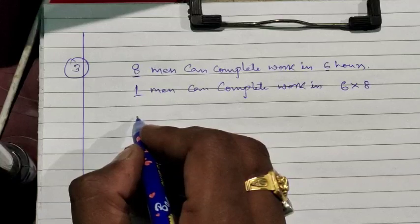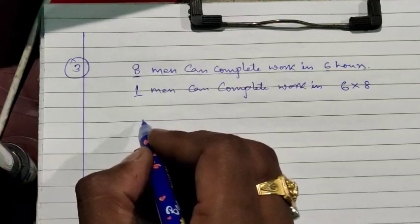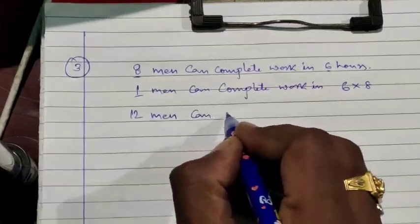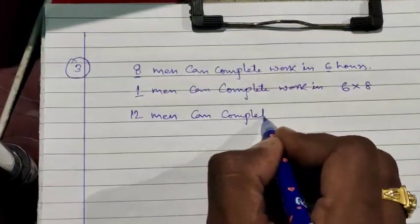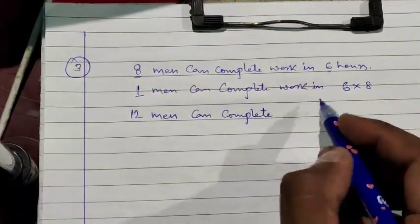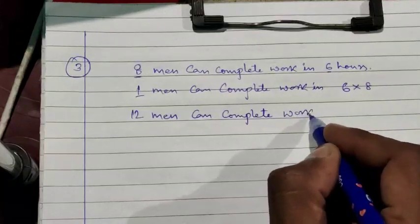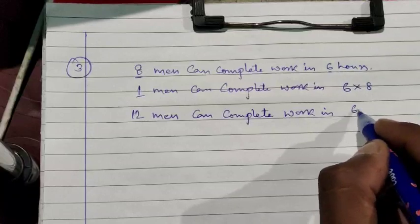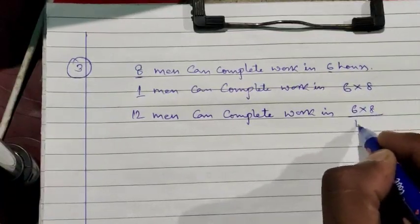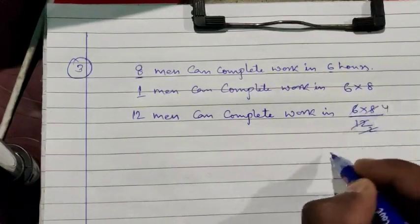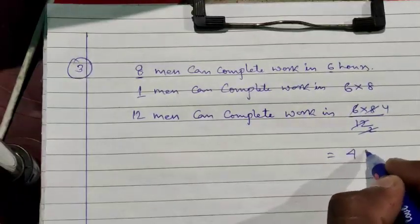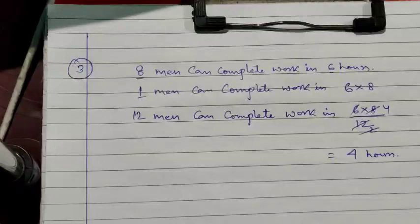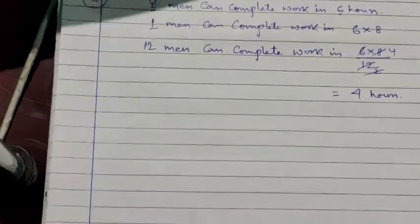One man can complete the work in — second step is multiplication — 6 multiplied by 8. The question asks: in how many hours can 12 men complete the work? In the third step, it will be division: 6 multiplied by 8, divided by 12. Simplifying: 48 divided by 12 equals 4. Therefore, 12 men can complete the work in 4 hours.